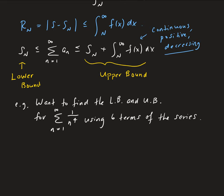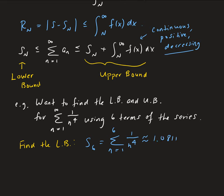First, let's find the lower bound — we need to calculate S of 6. This means we're going to calculate the series going from 1 to 6, so 6 terms. You can do this in your calculator or by hand. So we end up getting approximately — using four decimal places — that value will be our lower bound.